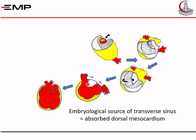The transverse sinus is located between the two ascending arteries — the aorta and pulmonary trunk — and the two atria behind. As the heart tube elongates further and becomes S-shaped, it creates a part of the pericardial sac located behind the atria. This part that is hidden is the oblique sinus. So we can easily say that the atria intervene, especially the left one, between the transverse sinus anteriorly and the oblique sinus posteriorly.